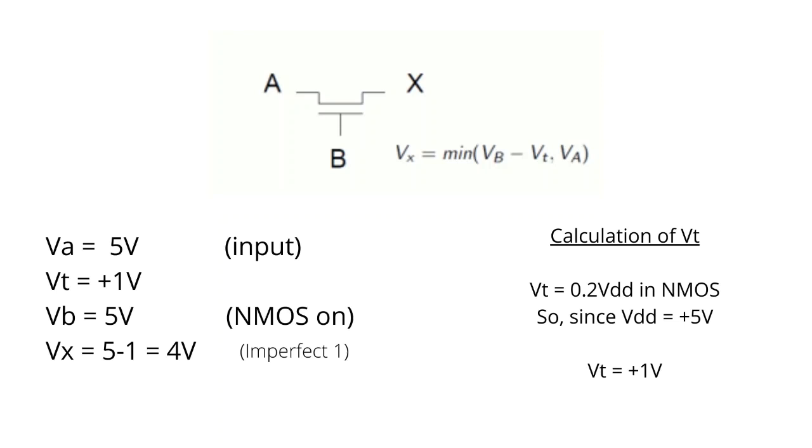The V threshold we can consider it to be 0.2 times VDD, so in this case it's going to be 1 volt as the calculation is shown in the right hand side.